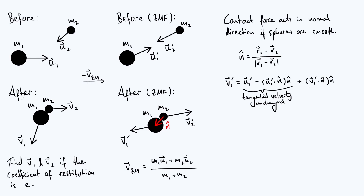A similar expression holds for v2 dash. One constraint on v1 dash comes from the coefficient of restitution. The coefficient of restitution e is by definition the speed of separation over the speed of approach, where we specifically refer to the relative speeds of the two spheres along the normal direction n. We need to be careful with plus and minus signs when constructing these relative speeds.